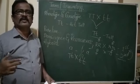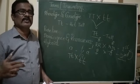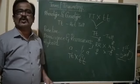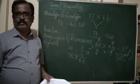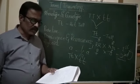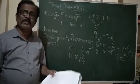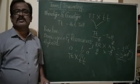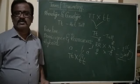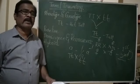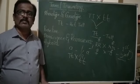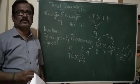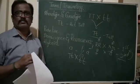Pedigree refers to the ancestral history of an individual. Siblings or sibs are the offspring or children which have the same maternal and paternal characters — the offspring having the same maternal and paternal characters are called siblings or sibs.